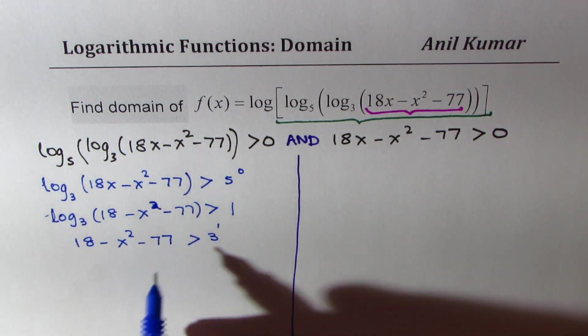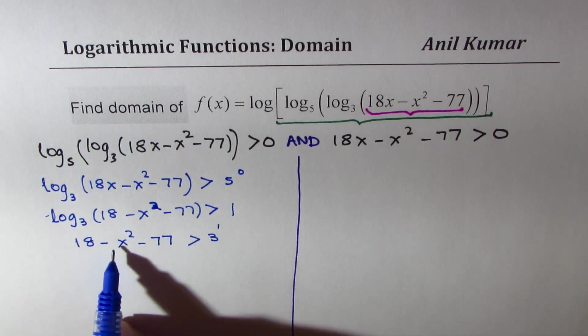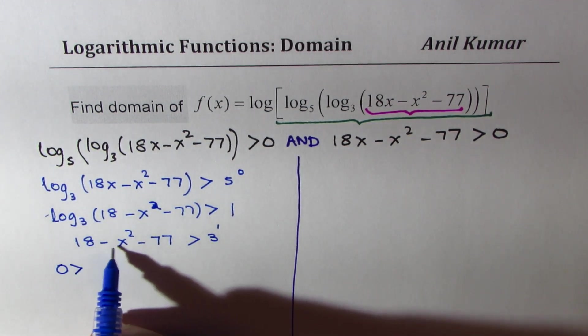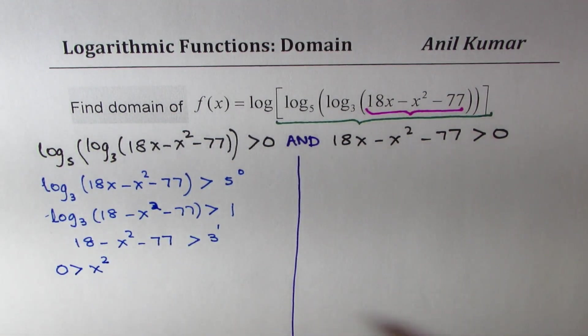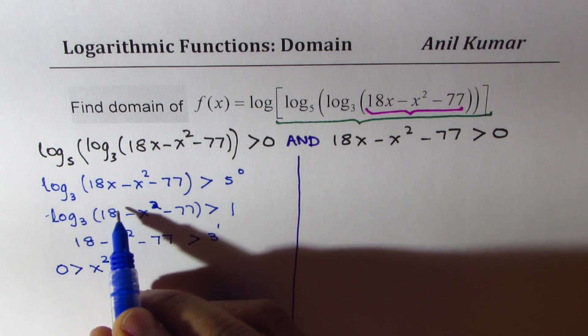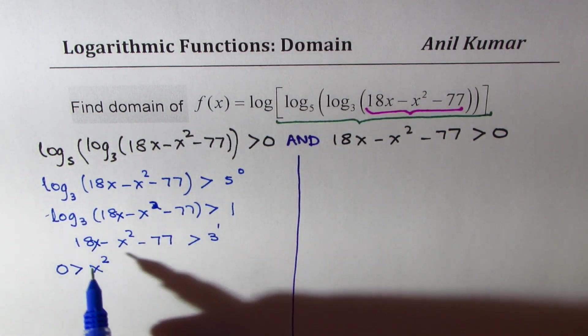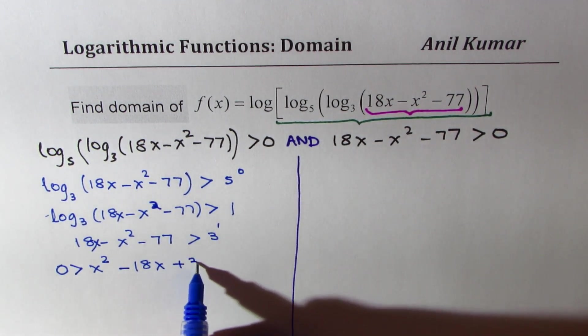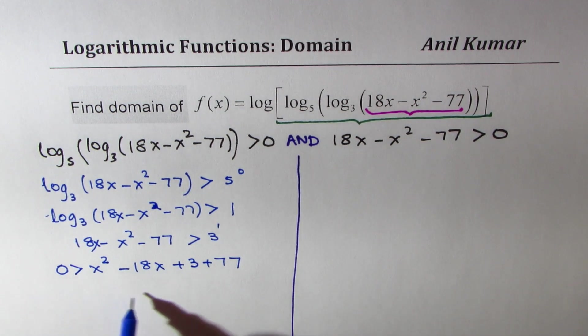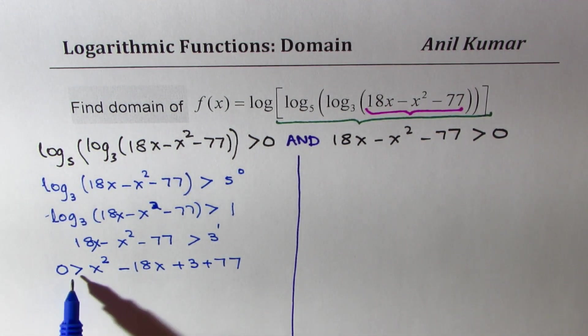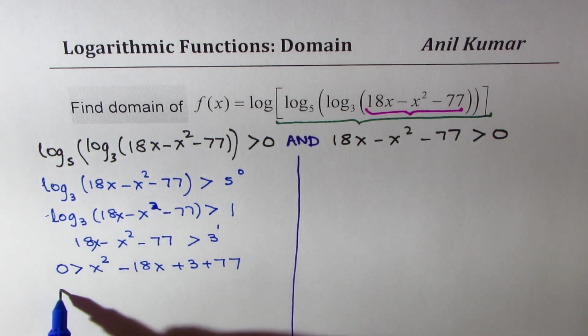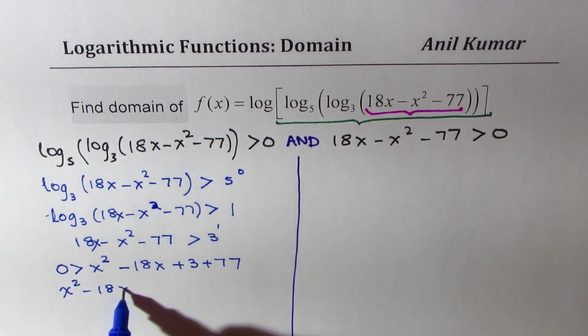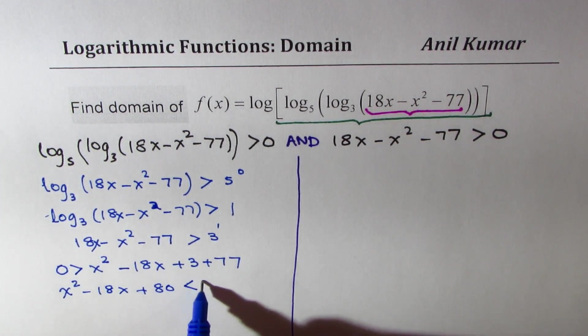Let's bring 3 to the left side. Bringing all terms to the right side, we get 0 > x² - 18x + 3 + 77. So what we're saying is that this whole thing should be less than 0. Let's rewrite: x² - 18x + 80 should be less than 0.